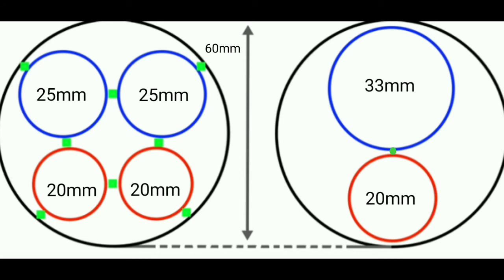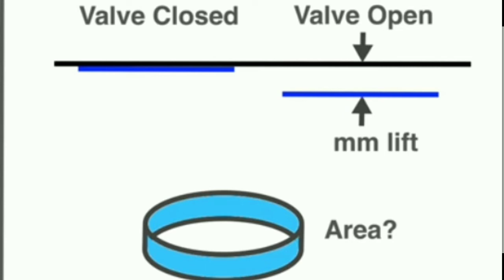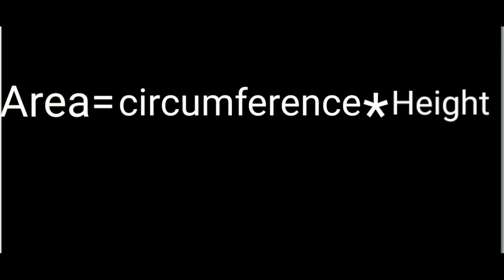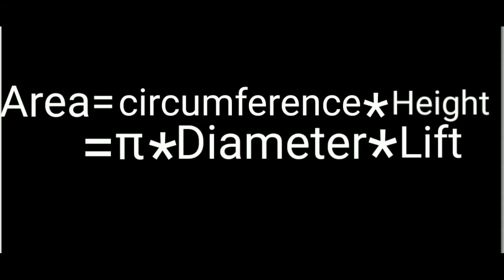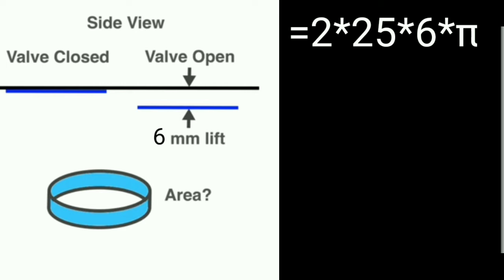To know why the four valve system is better, we first calculate the intake valve area. Looking at the side view of the four valve cylinder, one valve opens while the other remains closed. The gap from the open valve to the initial point is the valve lift — consider it as 6 mm. The intake area equals circumference times height, which is π × diameter × lift. Since there are two inlet valves, we multiply by two: 2 × 25 mm × 6 mm × π = 300π mm².